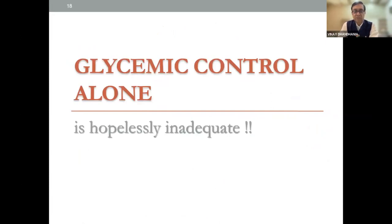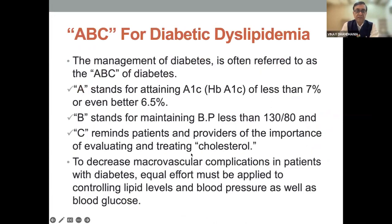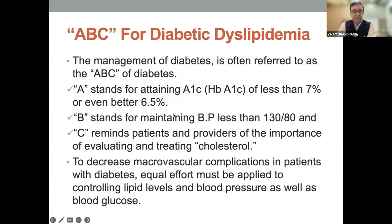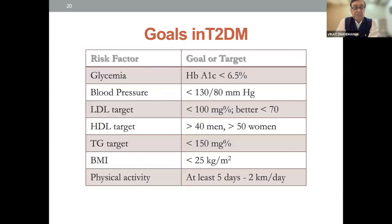Glycemic control alone is hopelessly inadequate. The ABC of diabetic dyslipidemia management: A stands for retaining HbA1c of less than 7%, or even better than 6.5. B stands for maintaining blood pressure less than 130/80. C reminds patients and providers of the importance of evaluating and treating cholesterol to decrease macrovascular complications in patients with diabetes. Equal efforts must be applied to controlling lipid levels, blood pressure, as well as blood glucose.